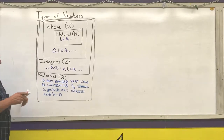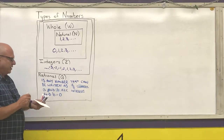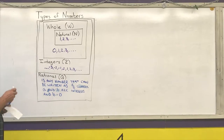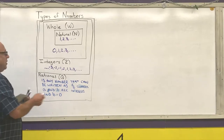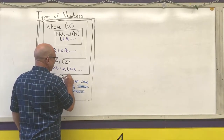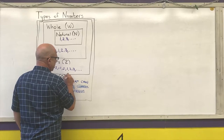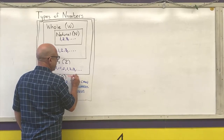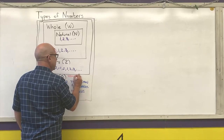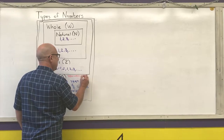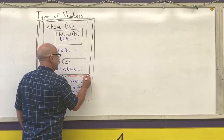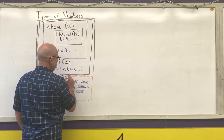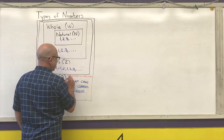Properties of rational numbers — things you can use to tell if something is a rational number: it either has a terminating decimal or a repeating decimal.